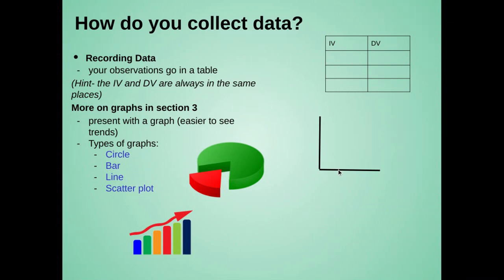When we're graphing things with our independent and dependent variable in a line graph, we have the D right here and the I go right here.